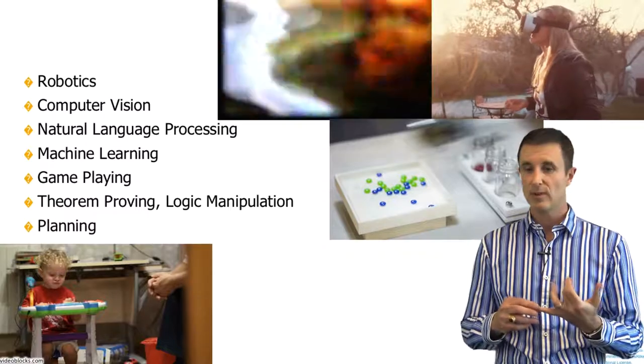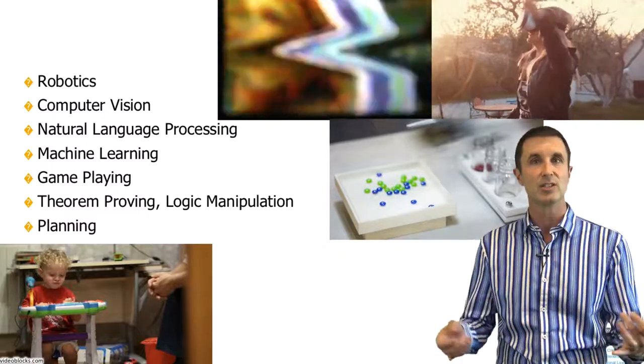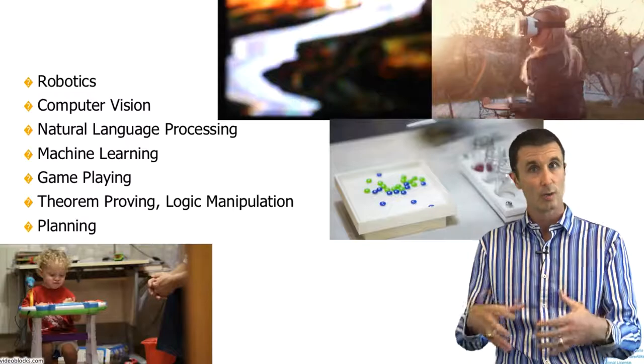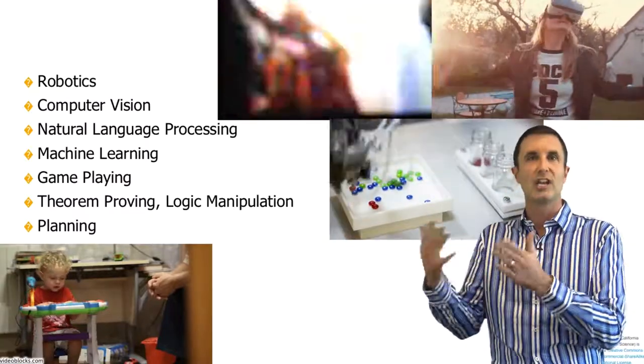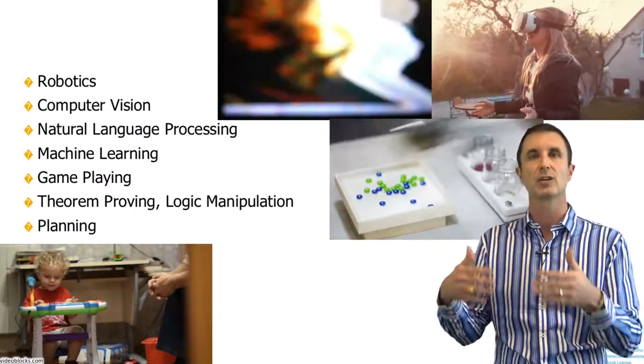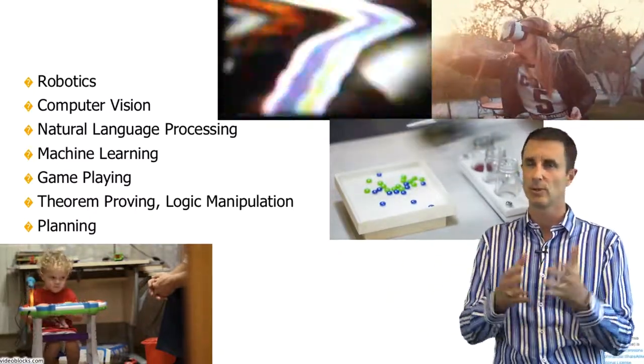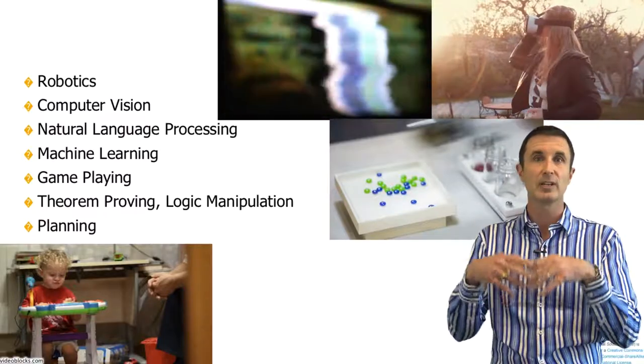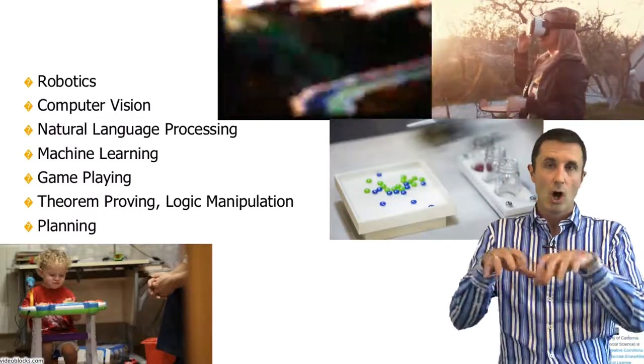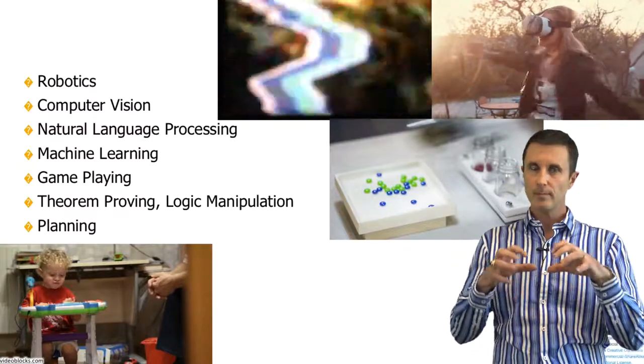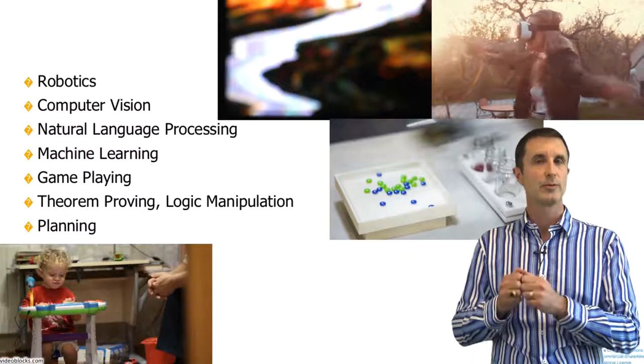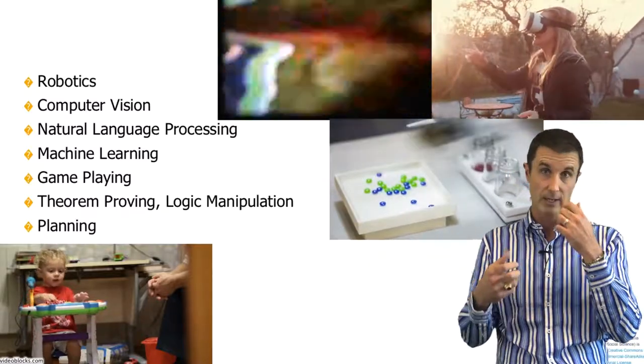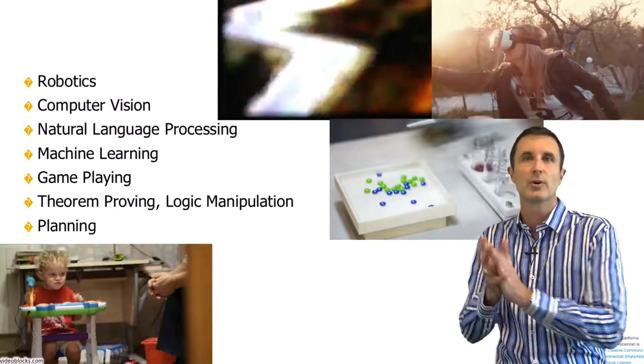So you have robotics, even if the robot isn't intelligent. You have computer vision, understanding vision. You have natural language processing, which has its own sub-fields. You have machine learning, which is how do I take historic information and change what I do in the future. You have game playing, things like chess and checkers and Go. You have theorem proving, logic manipulation, and general planning ideas. So all of these were their own sub-fields. And now people who work in those sub-fields, some of them consider themselves still part of AI, and some of those sub-fields, people working in there don't consider it part of AI. It's its own field.